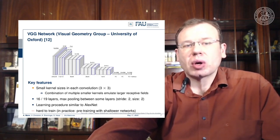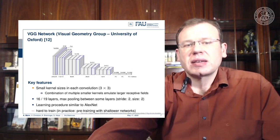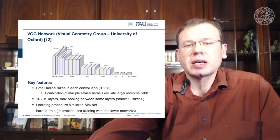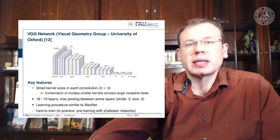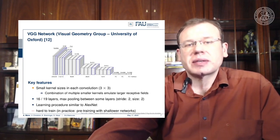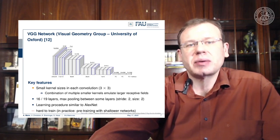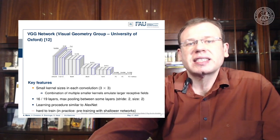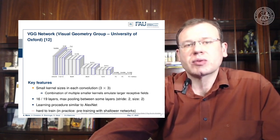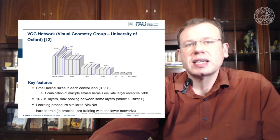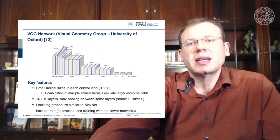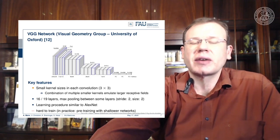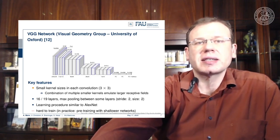The small kernel sizes are the key feature that are still used today. VGG was typically 16 or 19 layers deep, with max pooling between some layers using stride 2, size 2. The learning procedure was similar to AlexNet, but it turned out to be hard to train in practice — you needed pre-training with shallower networks. The network has a lot of parameters and isn't so great in terms of efficiency, but because it's pre-trained and available open-source, the community adopted it quite widely. Shared trained models and source code are key to enabling further development.